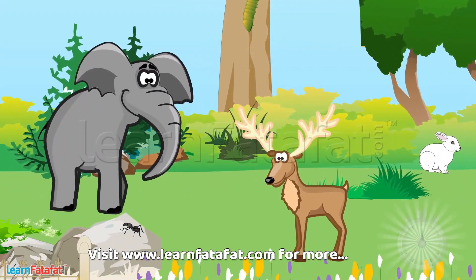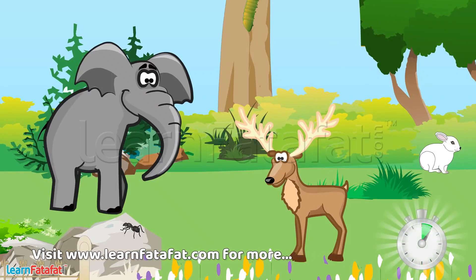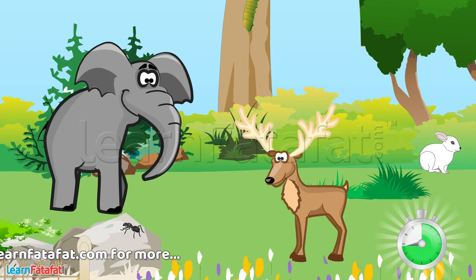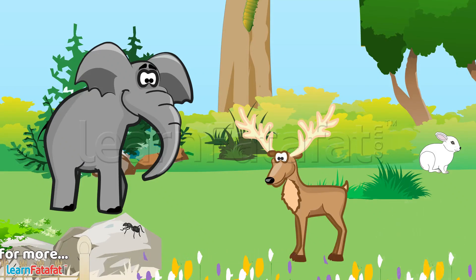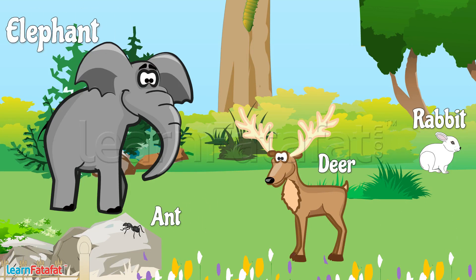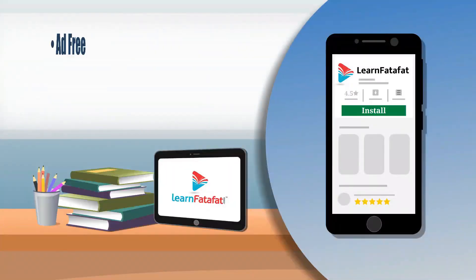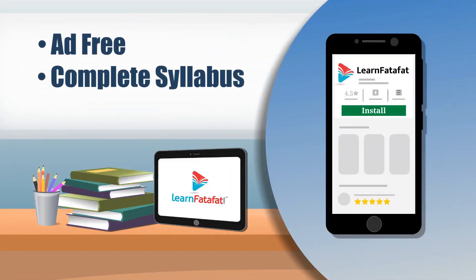Yes, there are ants, rabbit, deer, and elephant on the ground.